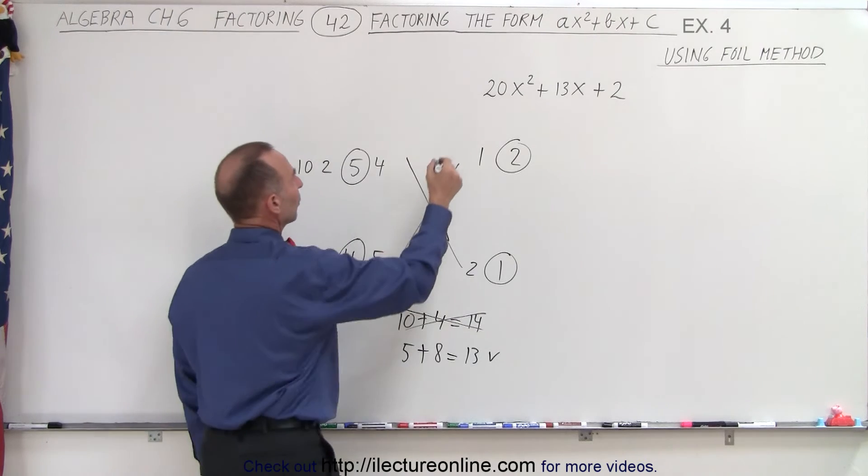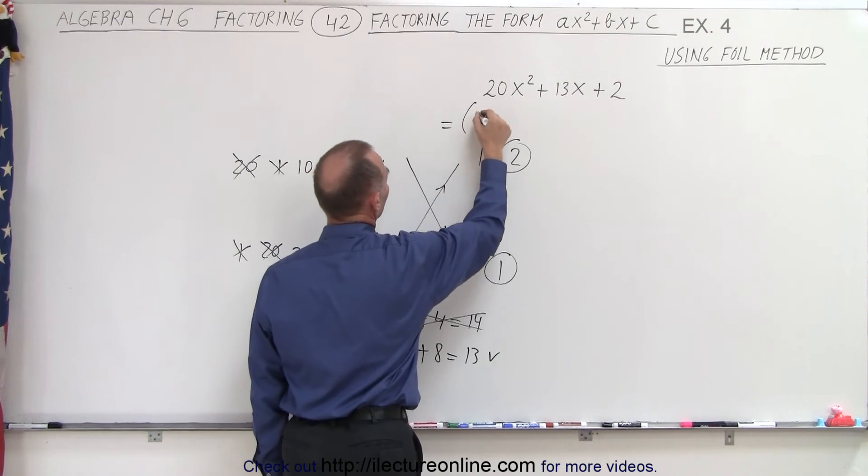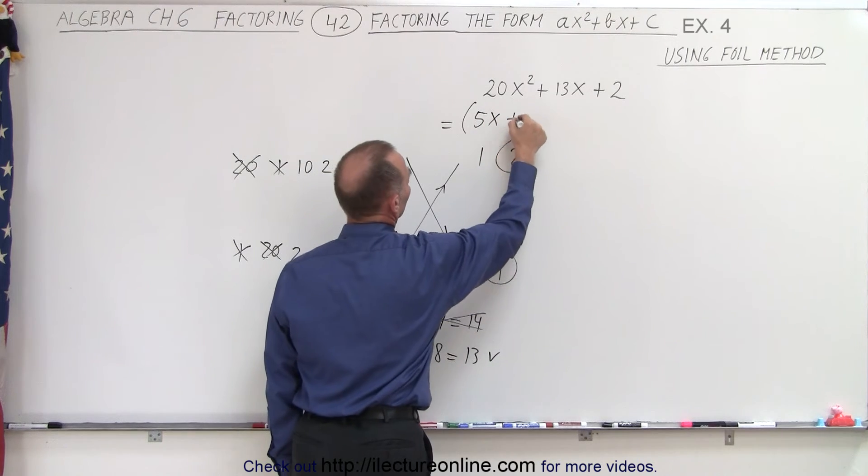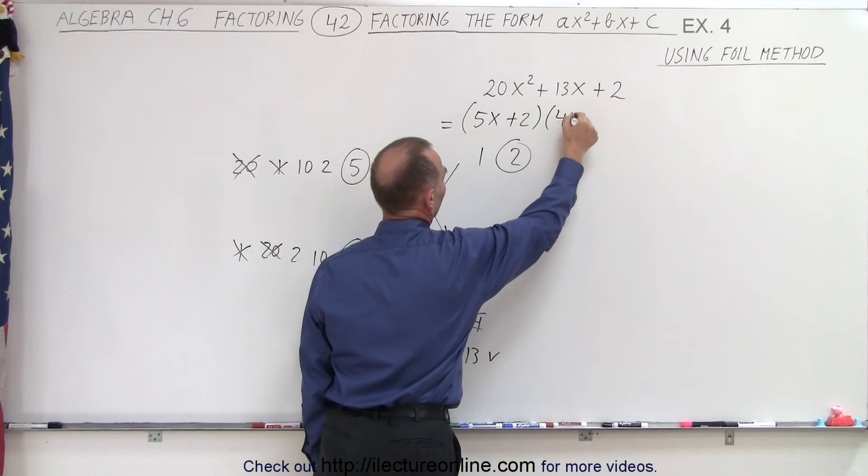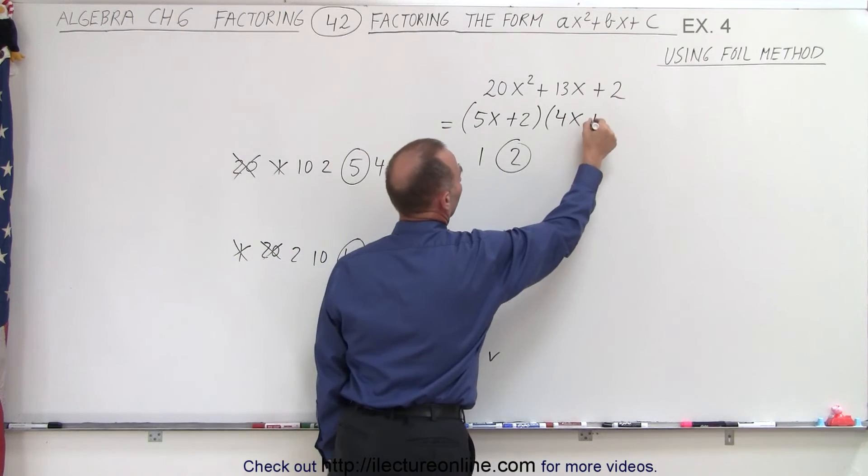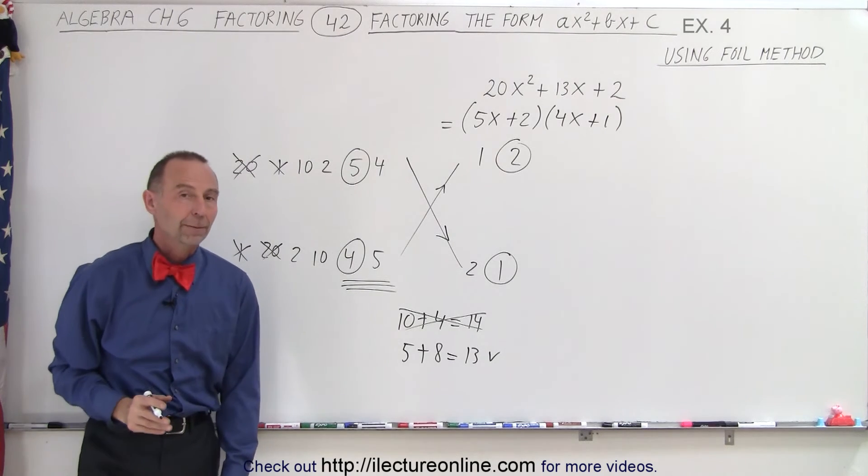So what I do now is go ahead and write this as a factored form. I end up with 5x plus 2 multiplied times 4x plus 1. And that is the factored form of my original problem.